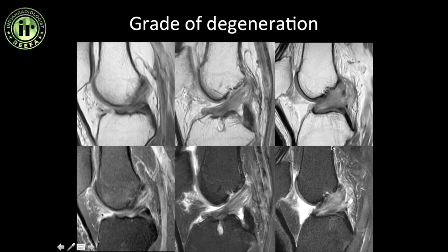In a mucoid ACL you need to mention the grade of degeneration, which is mainly based on eyeballing. This is mild degeneration, this is moderate, and this is marked mucoid degeneration.